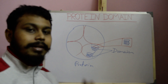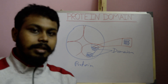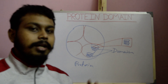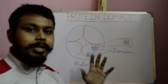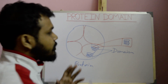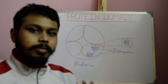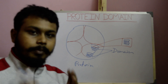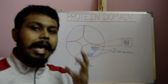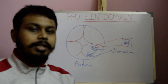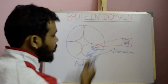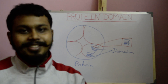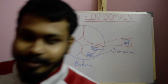A protein domain, however, can retain its stable structure outside of the protein — that is why it is called an independently folded structure. The second difference is that protein motifs are mostly not biologically active or functional, but protein domains have a particular biological function. Thank you for watching.